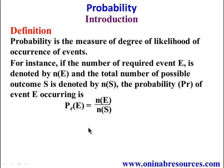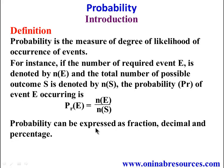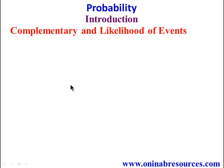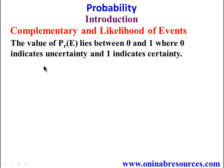This probability can be expressed as a fraction, decimal, and percentage. We also look at complementary and likelihood of events. The value of P(E) lies between 0 and 1, where 0 indicates uncertainty and 1 indicates certainty.